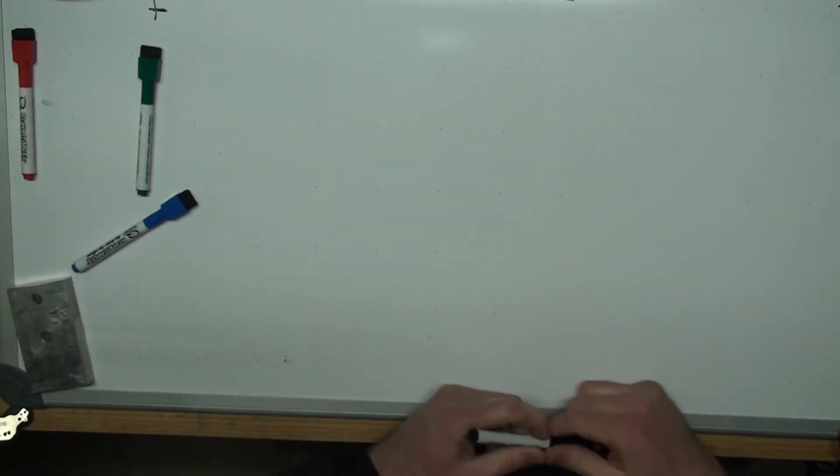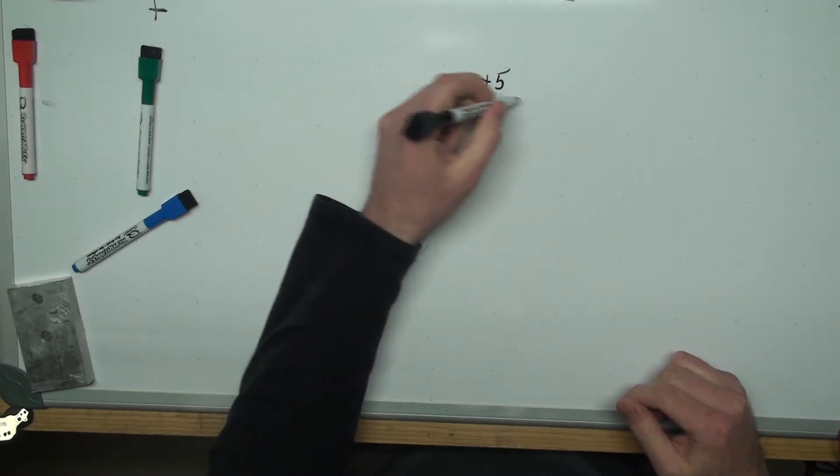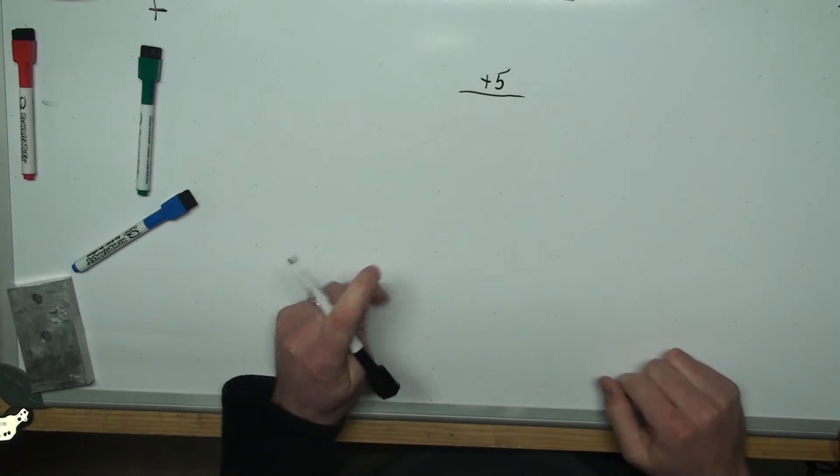Hi, today I want to talk about driving an inductive load using a transistor and some of the things you have to look out for. In this demonstration I'll be using a plus 5 volt supply. It's actually four double A's which are nearly dead, so it's only going to be about 5 volts.